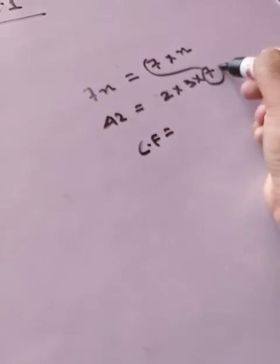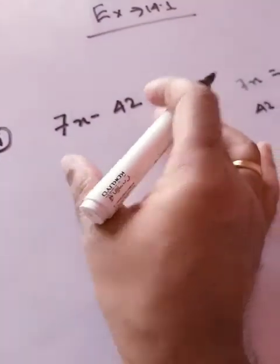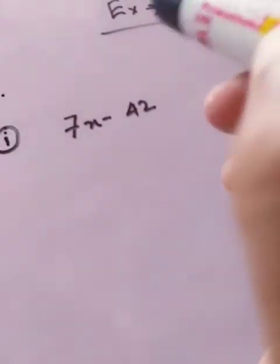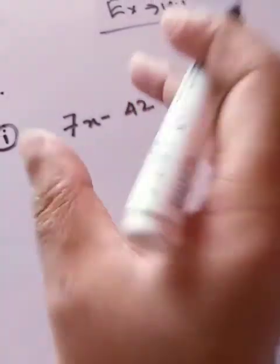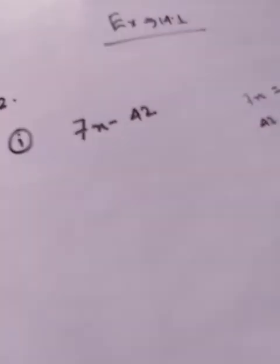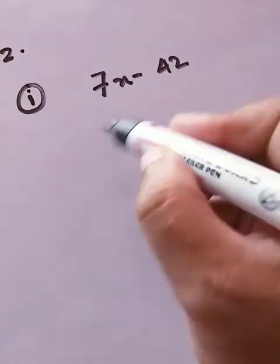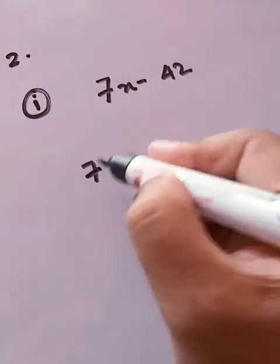So what is the common factor? Common factor is 7, isn't it? So in this case we have to see what is the common factor that we can write. This is what we have to decide for each and every sum of question number two.